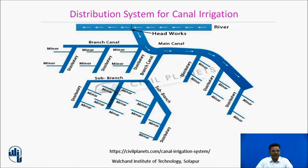In another schematic, a river flows with a head work where the main canal starts. From the main canal there can be a branch canal; from the branch canal, a sub-branch; from the sub-branch, a distributory; and from the distributory, a minor. Such is a typical canal network.